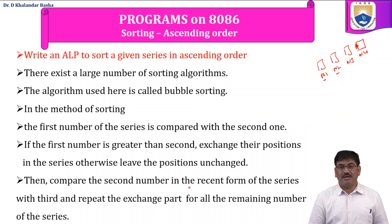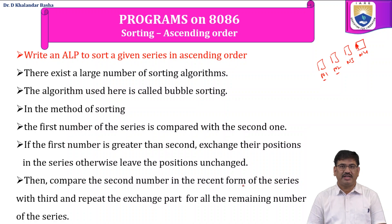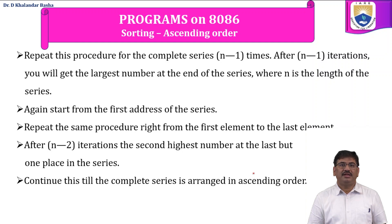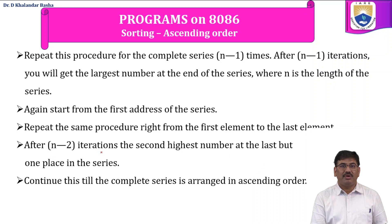Then compare the second number with the third and repeat the exchange for all the remaining numbers of the series. Repeat the procedure for completing the series N minus one times. After N minus one iterations, you will get the largest number at the end of the series, where N is the length of the series. Again start from the first address of the series and repeat the same procedure. After N minus two iterations, the second highest number is at the last but one place.